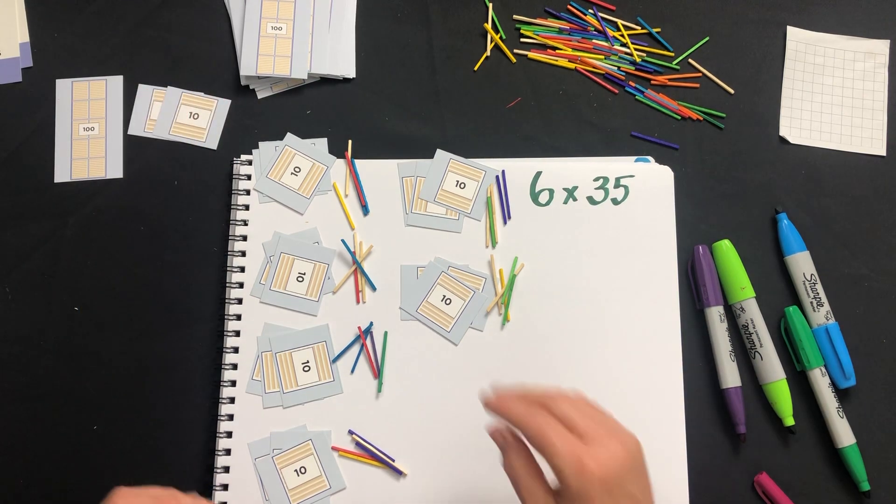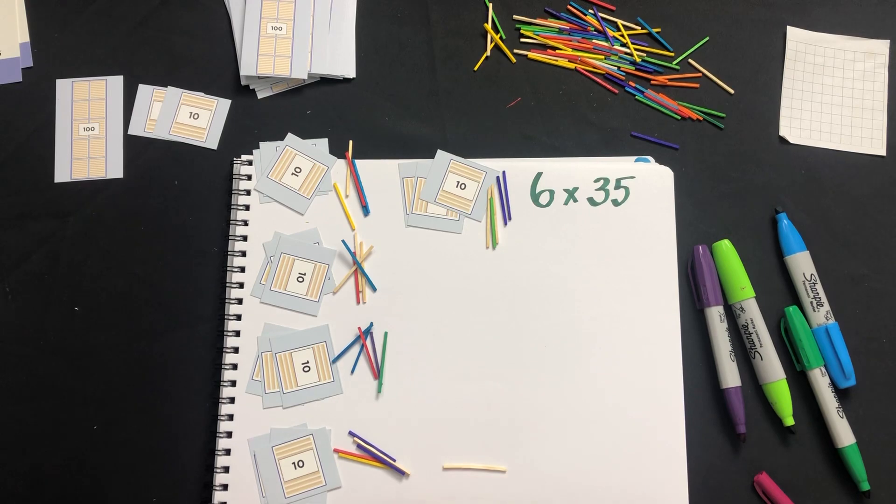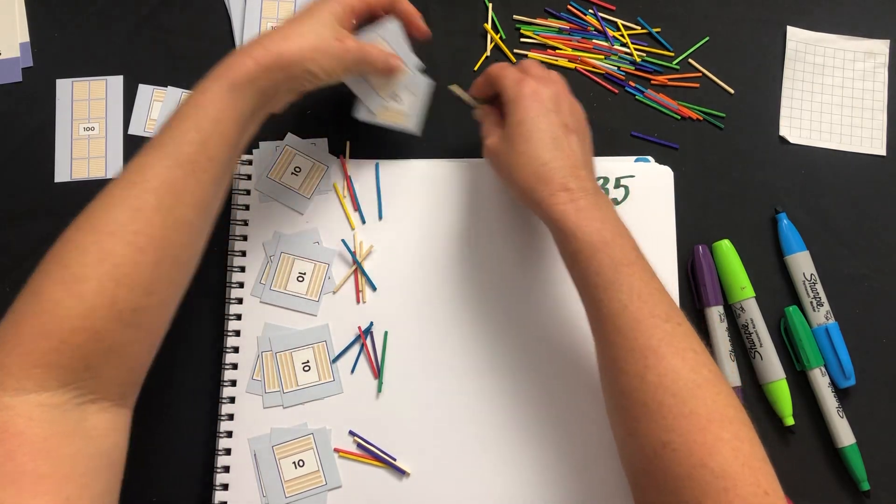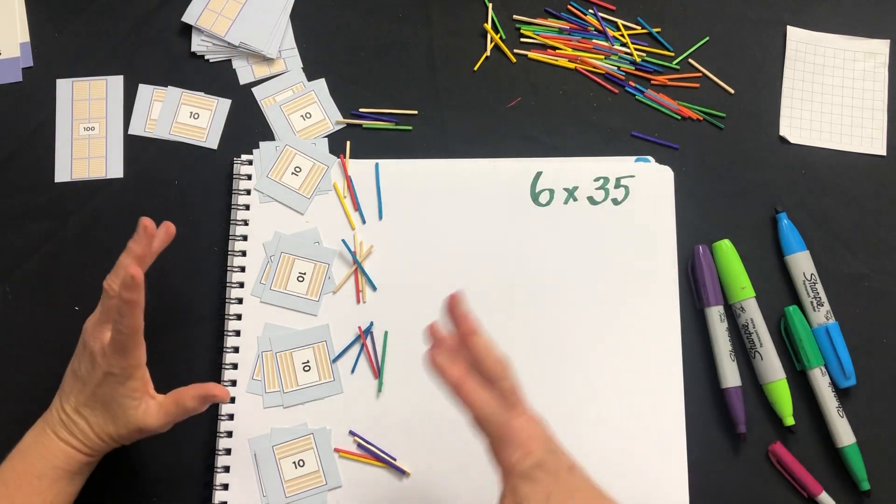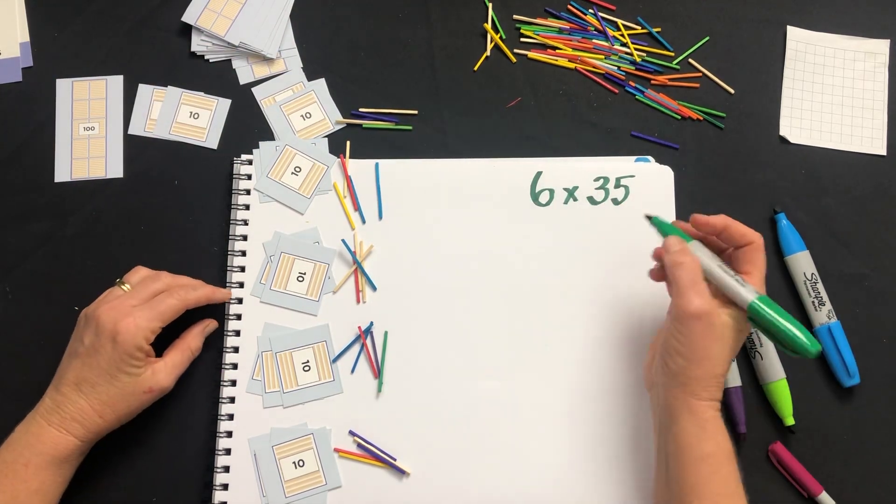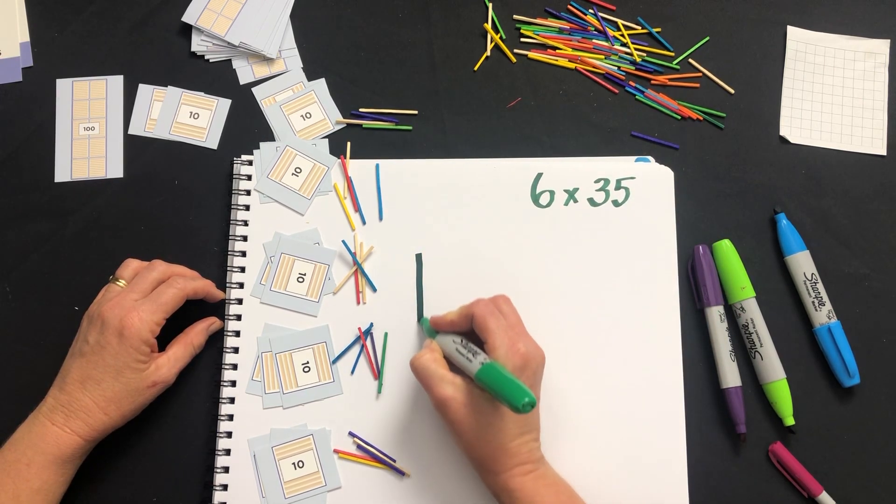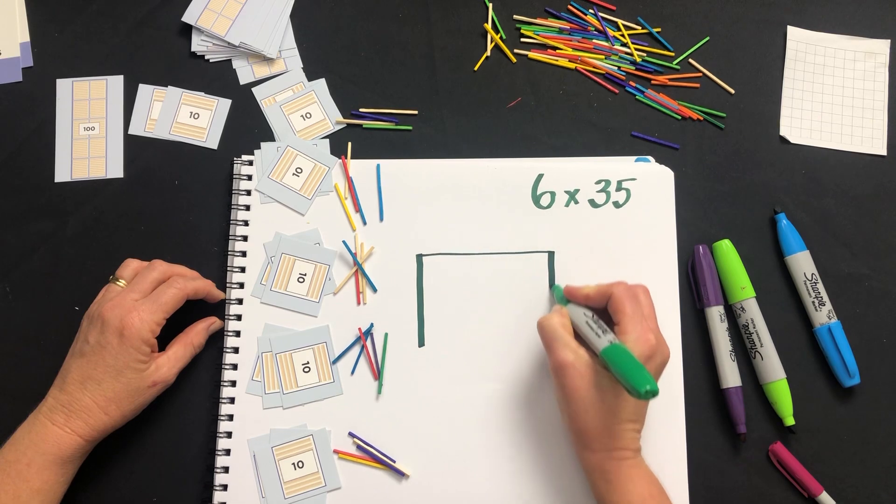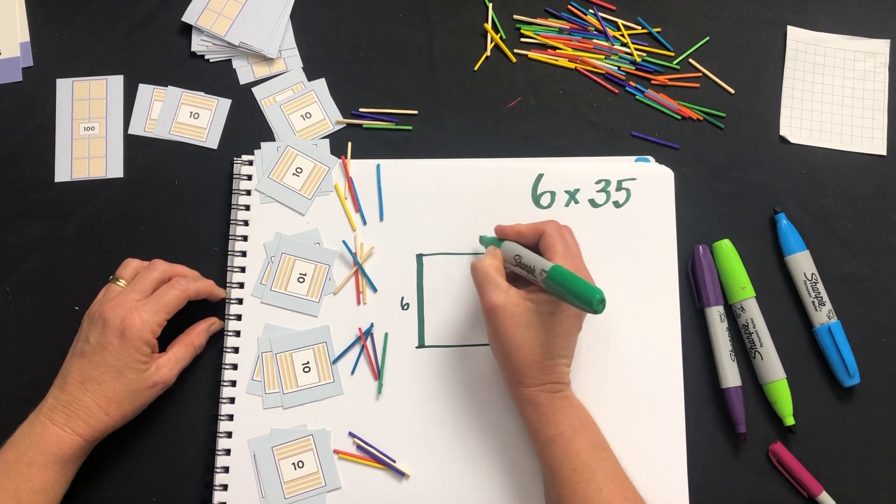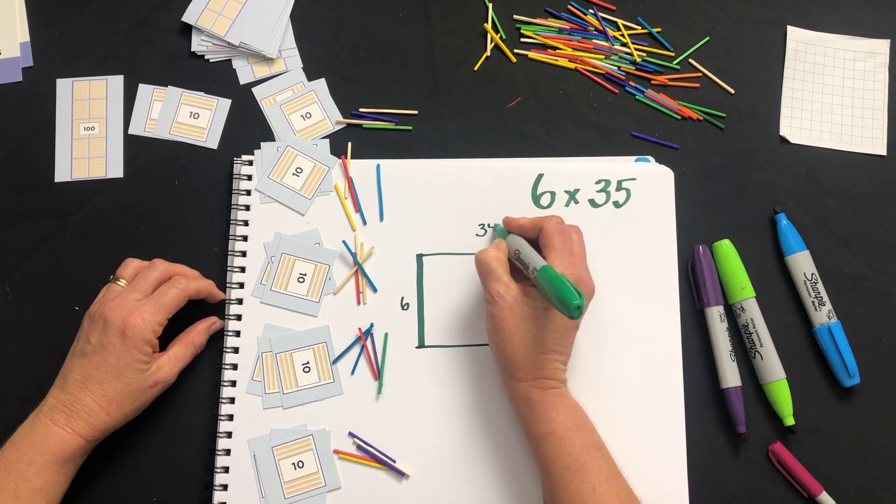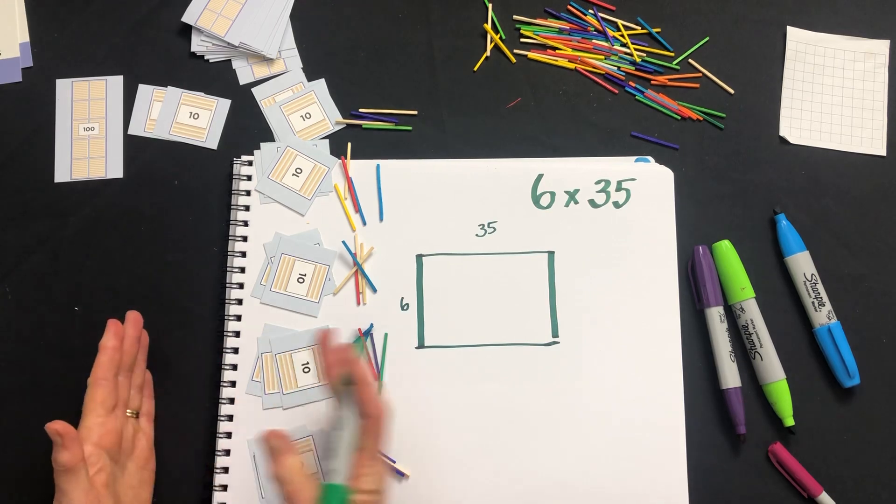What we can do, and if my screen was big enough, we could have these all down here in a nice rectangular or array fashion and represent it as a rectangle. So this 6 times 35 can be represented as a rectangle that is six wide and 35 long - six groups with 35 across.